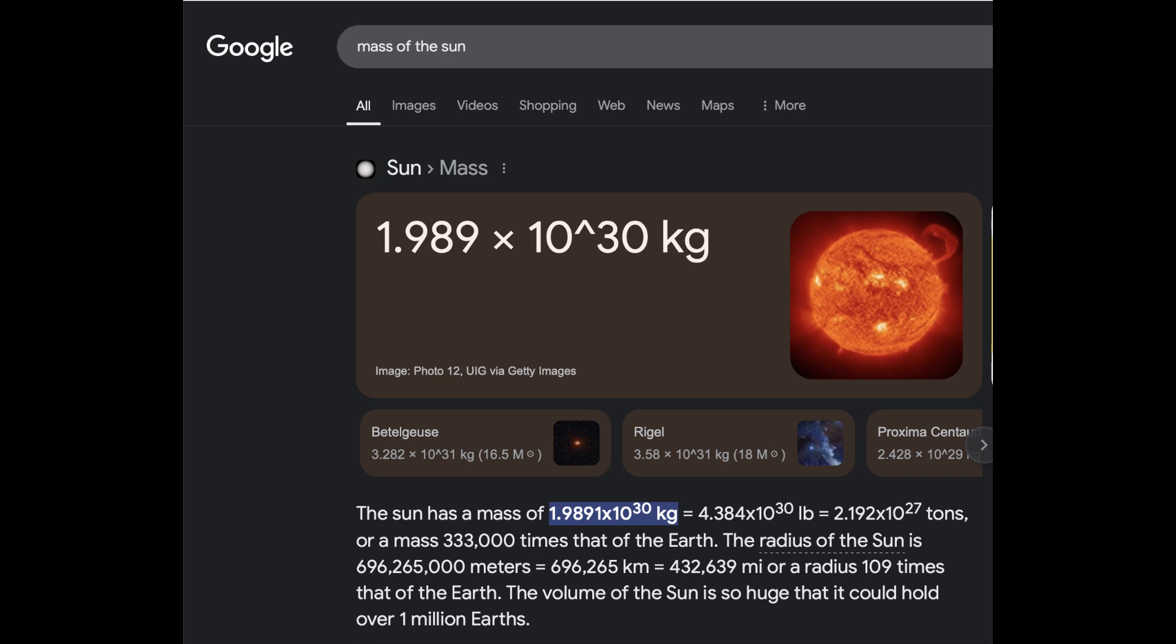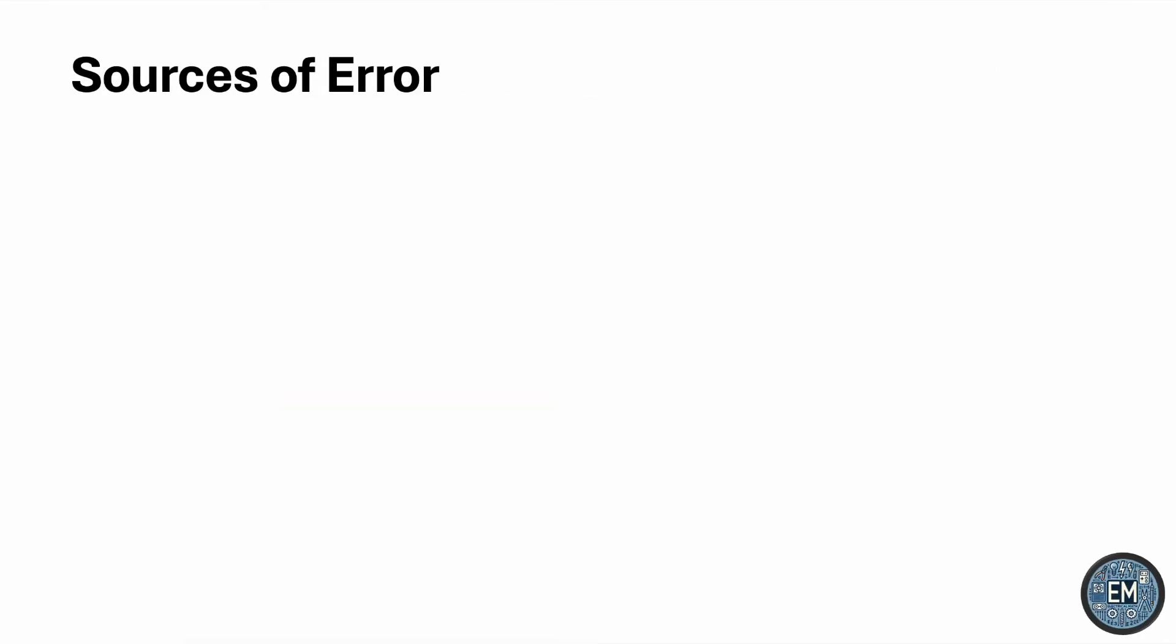There are actually a few sources of error in the approximation we used. First and foremost, one year is actually 365.25 days. The reason being every four years there is a leap year in which there is an additional day. So to account for this extra day, we say that on average every year has one quarter of a day extra, so that we would have averaged out this extra day over every four-year period.